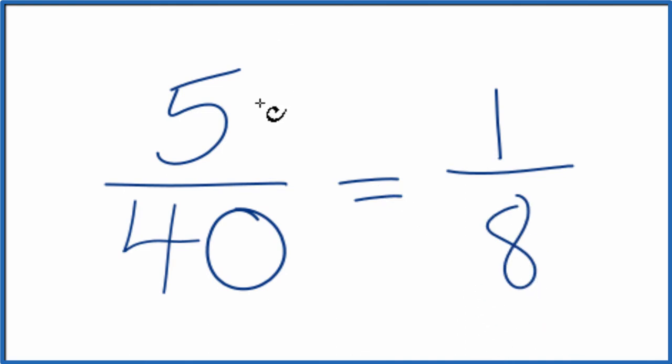We've simplified the fraction 5/40 down to 1/8. We can't reduce this any further. These are what we call equivalent fractions—they have the same value. That's why we have the equals sign there. If you divided 5 by 40 and 1 by 8, you'd get the same number.